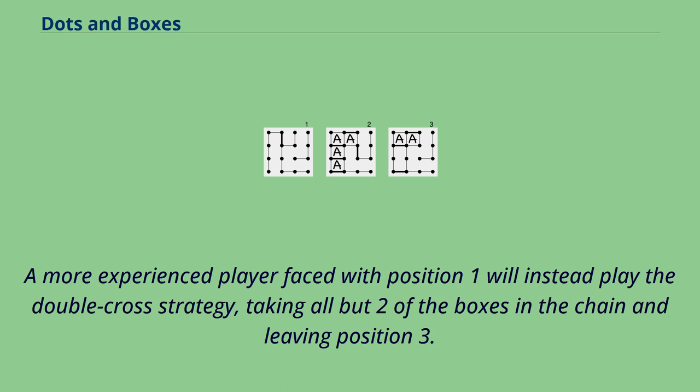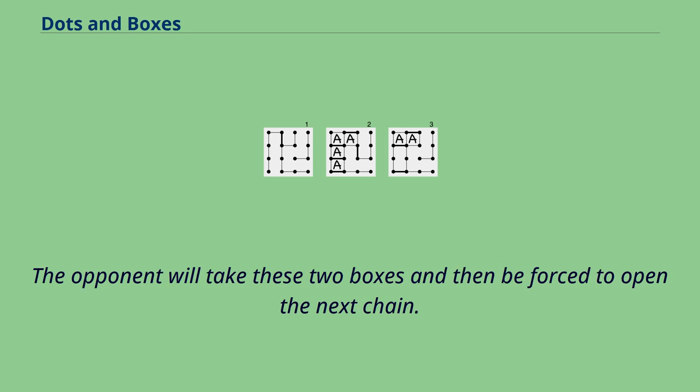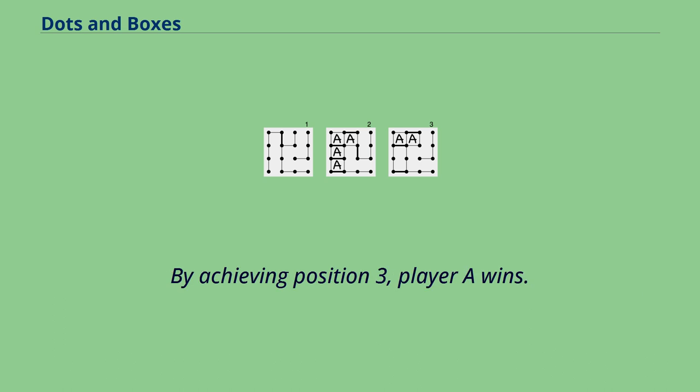A more experienced player faced with position 1 will instead play the double-cross strategy, taking all but two of the boxes in the chain and leaving position 3. The opponent will take these two boxes and then be forced to open the next chain. By achieving position 3, player A wins.